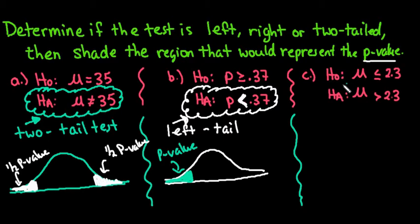For the last one, we have the population mean is less than or equal to 2.3, and the alternative is the population mean is greater than 2.3. Again, we only look at the alternative. It doesn't matter what the null is.